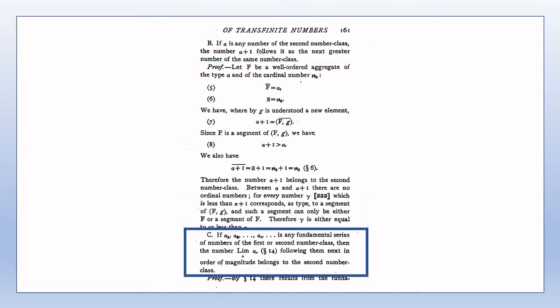The method of adding 1 to an ordinal number is not the only way of generating new ordinal numbers. Theorem C shows that we can use fundamental series of ordinal numbers to generate new ordinal numbers — this may be called the second principle of generation. It would seem from Theorem C that we're stuck in the second number class, since the first and second principles of generation do not seem to allow us to go beyond it. This will be taken up in more detail in the next section.